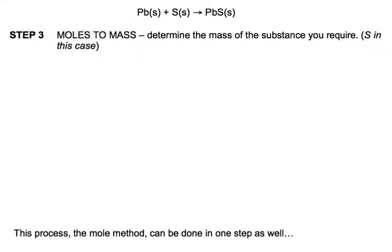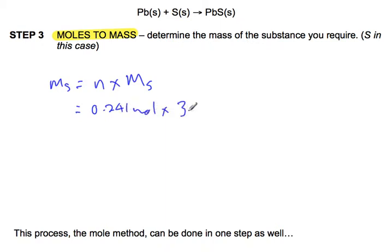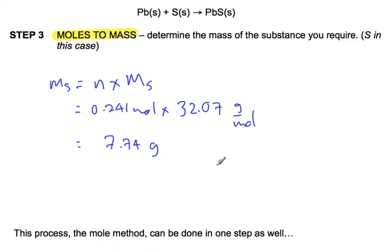The last step is a mole-to-mass conversion for our unknown, sulfur. Mass of sulfur equals number of moles times molar mass of sulfur: 0.241 moles times 32.07 grams per mole equals 7.74 grams. That's three significant figures, based on the original mass of 50.0 grams given in the question. That's the mole method in three steps.